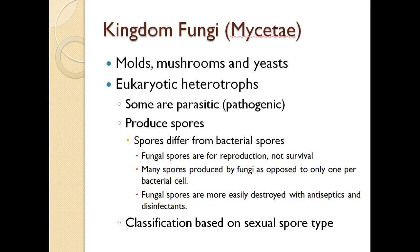We begin looking at kingdom fungi, or kingdom mycetae. This includes the molds, the mushrooms, and the yeast. They are eukaryotic and heterotrophic. Some of them are pathogenic or parasitic — you know this if you've ever suffered from athlete's foot or jock itch.